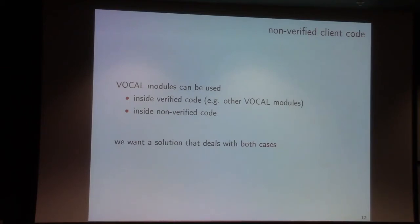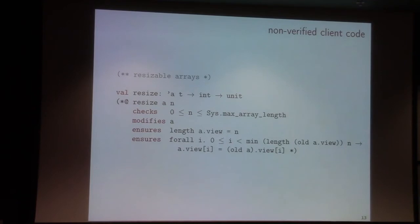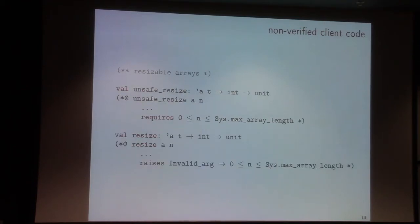I still want to use the benefits of proving the functions — for instance, inside other Vocal functions. But I also want to be defensive, to protect my client from hard crashes. So we propose another clause called "checks." Checks can be read as a regular precondition for the resize function. The idea is that internally it's going to generate two different versions of this resize function.